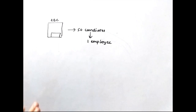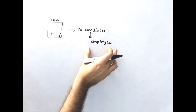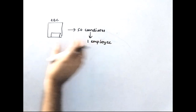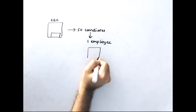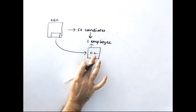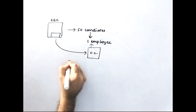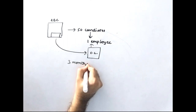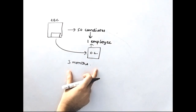Out of the 50 candidates, based on qualifications, experience, and other criteria, they have finalized one particular employee. This employee is selected; they have called him and told him he is selected to be part of this company. Now they have given him one offer letter. This offer letter mentions all the terms and conditions — for example, he has to work a minimum of three months.